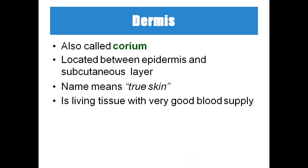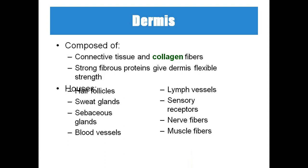The dermis is also called the corium, which is present between the epidermis and the subcutaneous layer. The meaning of corium is 'true skin.' It has a huge amount of blood supply, and the epidermis depends on it. The dermis is composed of collagen fibers, which make the skin flexible. Inside the dermis we have hair follicles, sweat glands, sebaceous glands, blood vessels, lymphatic vessels, sensory receptors, nerve fibers, and muscle fibers.